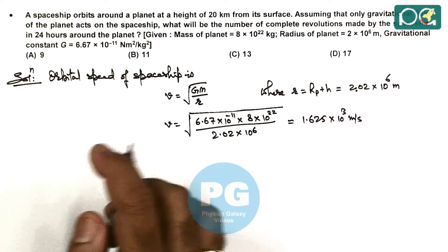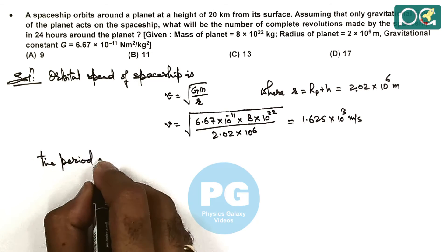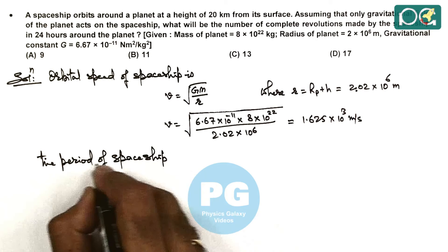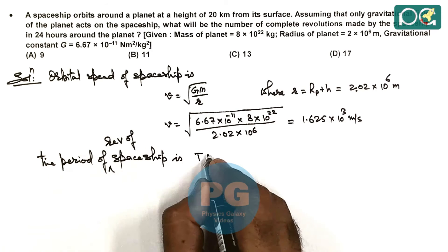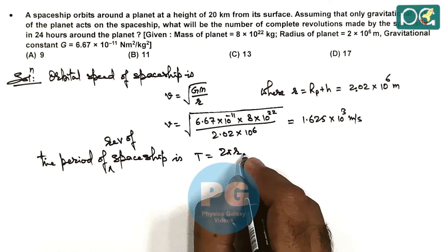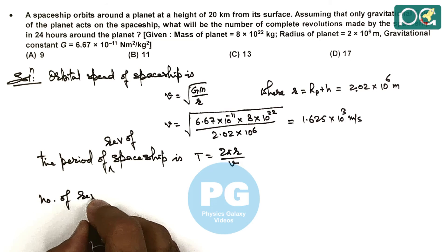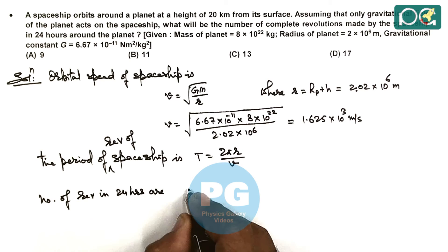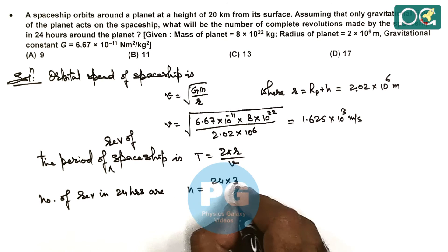As we have the orbital speed, we can calculate the time period of the spaceship. The time period of revolution is T = 2πr/v, and the number of revolutions in 24 hours is (24 × 3600) divided by the time period.